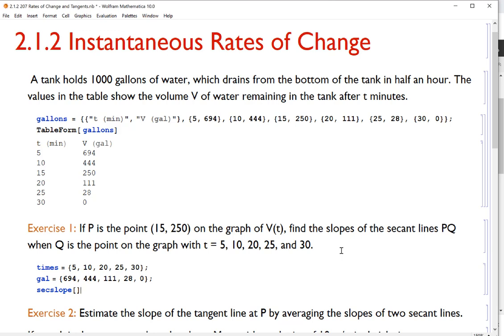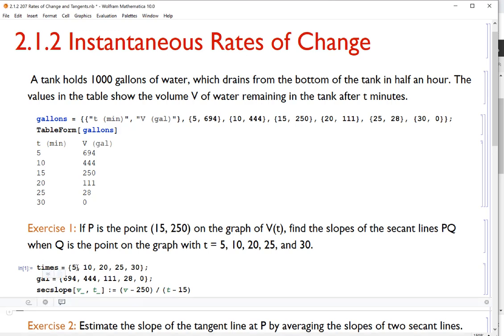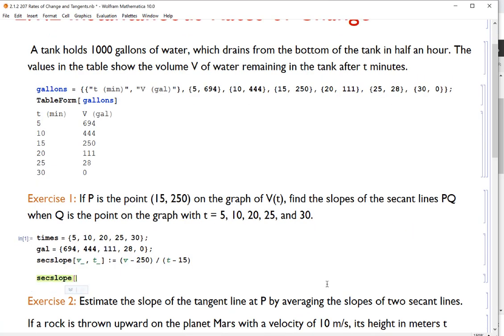That's the difference of y's over the difference of the x's. Here I don't have y's and x's. I have v's and t's. So I'm going to input a volume minus the fixed volume that we're interested in. And we're interested at the point (15, 250). So that volume would be 250 gallons over time minus the time that I'm interested in, which is at 15 minutes. So there's my secant slope. Now what I'm going to do is I'm going to input times, these times and these gallons into sec slope. You could do it one at a time. For example, if I said sec slope, I'll put 694, 5.